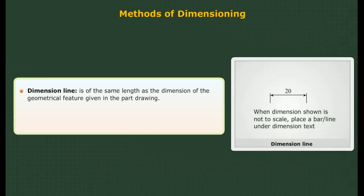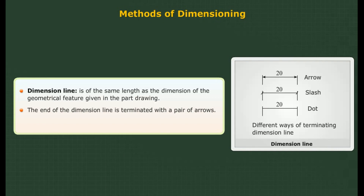The dimension line is of the same length as the dimension of the geometrical feature given in the part drawing. If different, place a slash under the dimension text to draw attention. The end of the dimension line is terminated with a pair of arrows, or sometimes with a slash or dot. Arrow size is selected to be nearly the same as the text size.